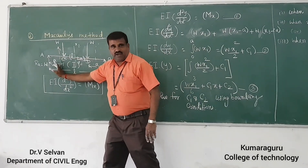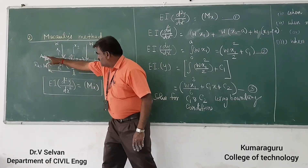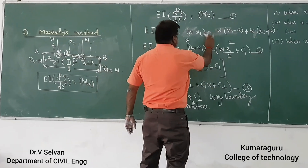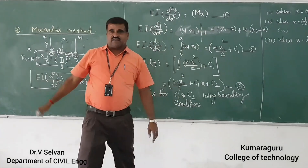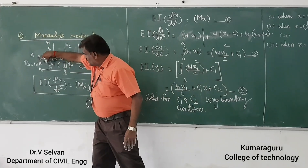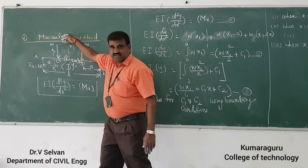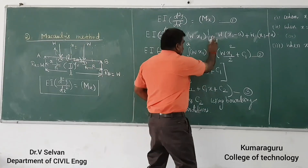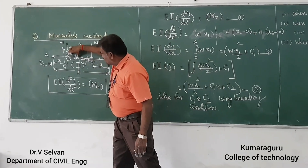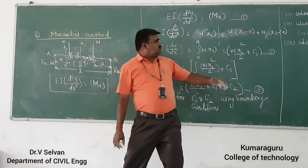For the second region, the existing term RA·x₁ remains, and we add the contribution of the discontinuous load. Because the load is a downward (hogging) load, it is negative. So we add minus W into (x₂ minus a), where x₂ is the distance from support A to the section, and 'a' is the distance to the point load.